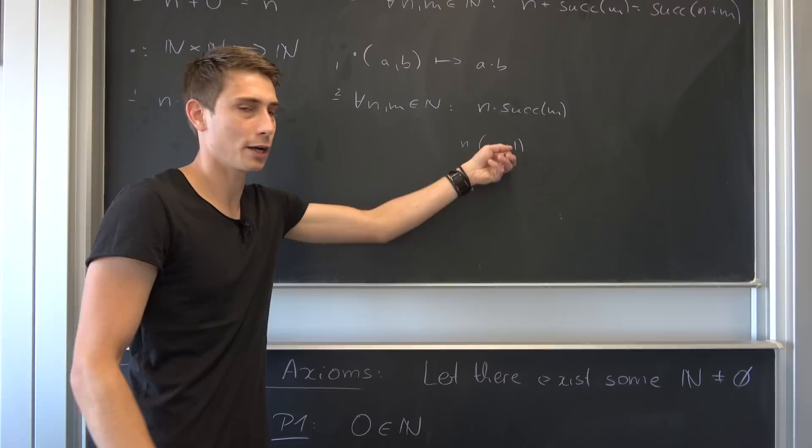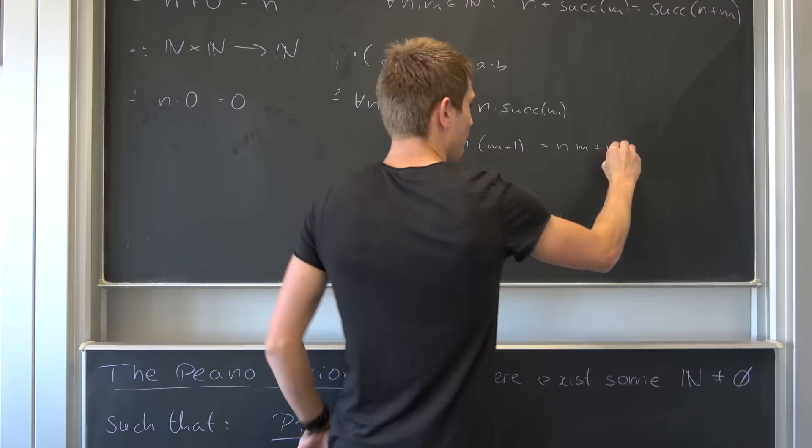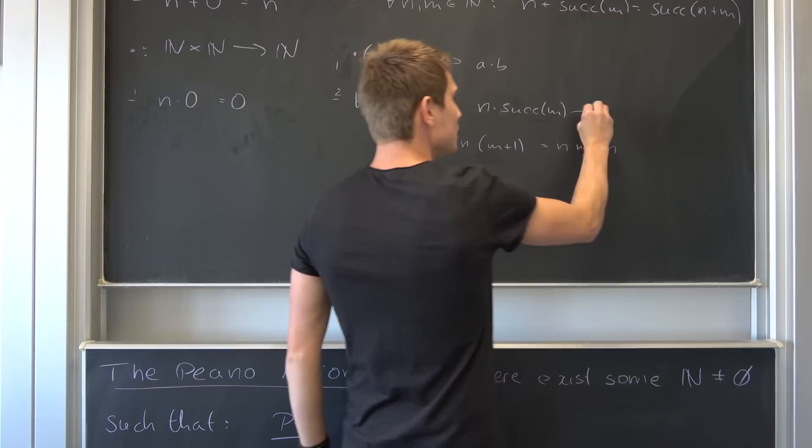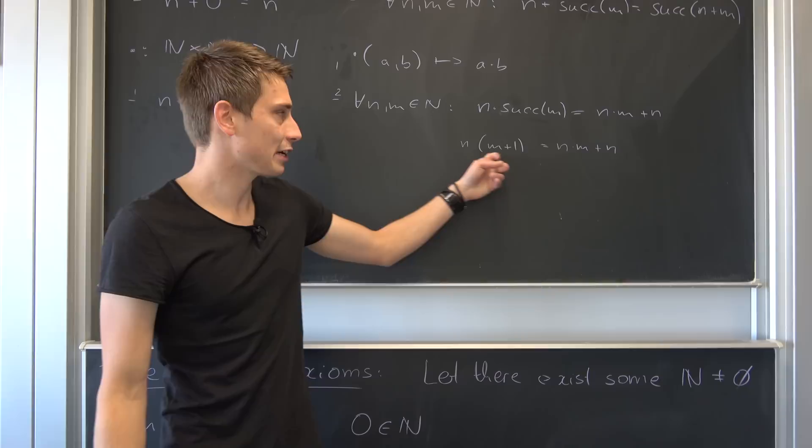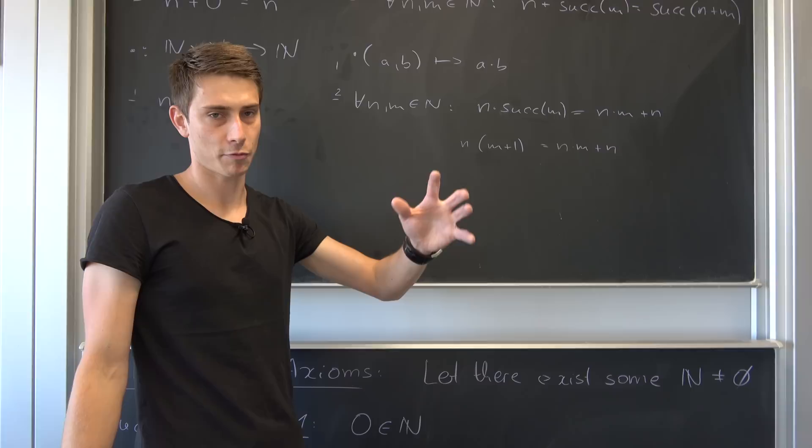Now we can just multiply all the factors together. So this is just N times M plus N, and that's exactly where we are going to land. So this right here is nothing but N times M plus N. And this is the second rule.